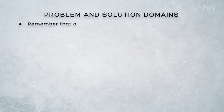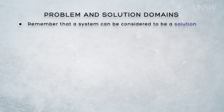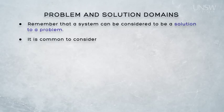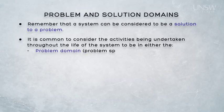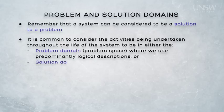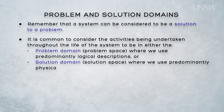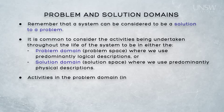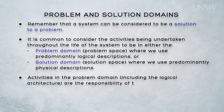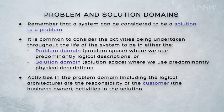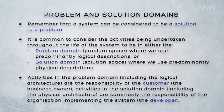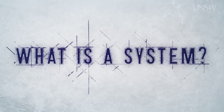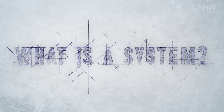We can complete our introduction to the nature of systems by returning to the observation that a system can be considered to be the solution of a problem. It's common to consider the activities throughout the life of the system to be either in the problem domain — the problem space — where we use mainly logical descriptions, or in the solution domain — the solution space — where we use mainly physical descriptions. The activities in the problem domain, including the production of the logical architecture, are mostly the responsibility of the customer or business owner, while the solution domain, including the physical architecture and physical solution, is generally the responsibility of the developer. In the next presentation, we'll look briefly at the lifecycle of a system before turning our attention to the principal focus of the course: Systems Engineering.